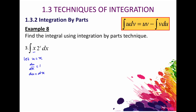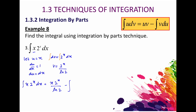Let dv equal to 2^x dx. Integrating both sides, on the left we get v, and on the right we get 2^x over ln 2. Putting that into the integration by parts formula, the integral of x times 2^x dx equals x times 2^x over ln 2, minus the integral of 2^x over ln 2 dx.